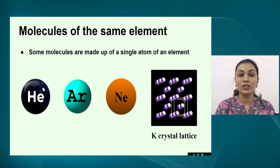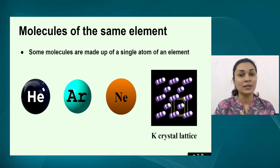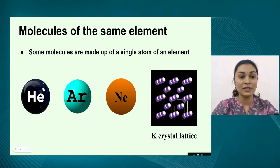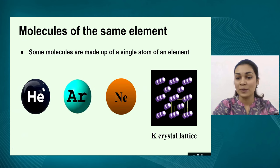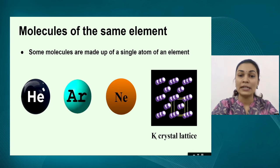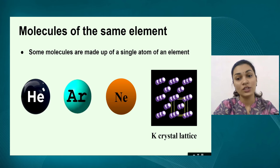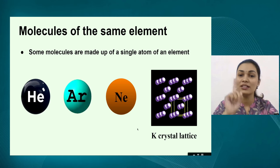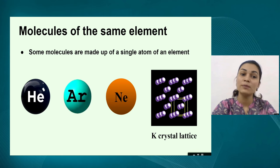The first type is when the molecules are made up of a single atom — so when one atom behaves like a molecule. Examples include helium, argon, neon, and we also have the crystal lattice of potassium. We know that potassium is a metal, and if you magnify inside that metal at the molecular level, you will see all the molecules are single potassium atoms. These are some special atoms which are capable of independent existence.